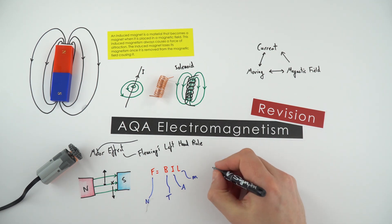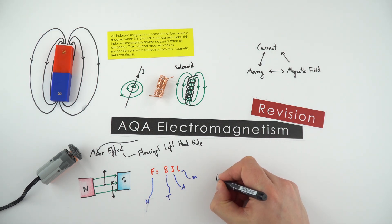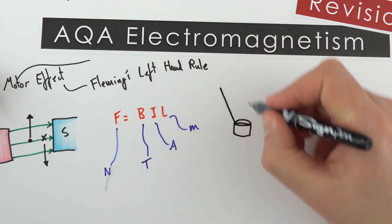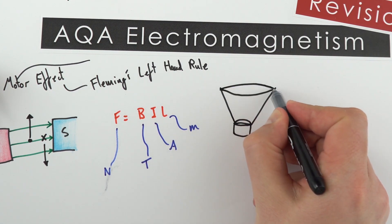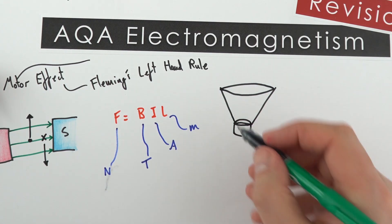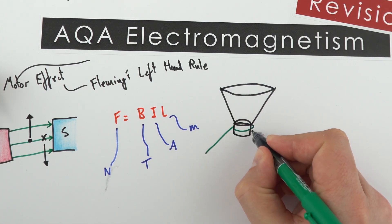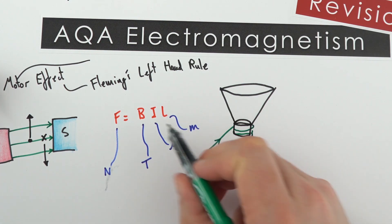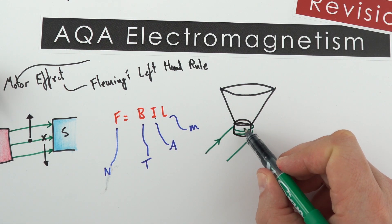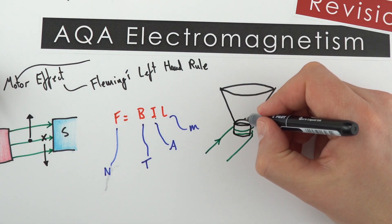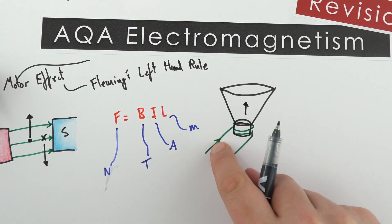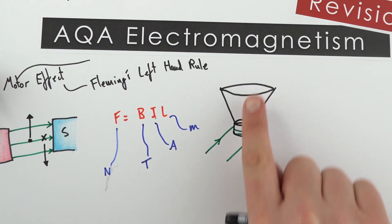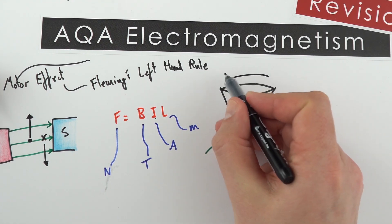It's not just motors that use the motor effect — we can also use it in loudspeakers. A loudspeaker has a very small circular magnet connected to a large paper or cardboard cone. A coil of wire wraps around the magnet several times. When current flows in one direction, the coil moves up; when the current flows the other direction, it moves down. By varying very quickly which way the current flows, the speaker moves up and down, radiating sound waves.